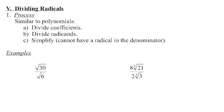Looking at this first example, the coefficient on the numerator is 1 and the coefficient on the denominator is also 1. 1 divided by 1 is 1. Then we divide the radicands: 30 divided by 6 is 5. So we have the square root of 5. The denominator is just 1, so there is no radical in the denominator. That one is okay.